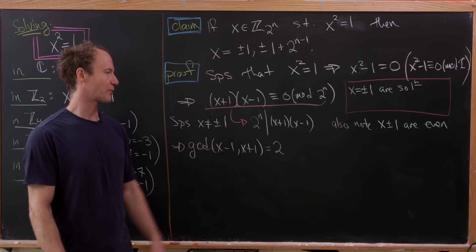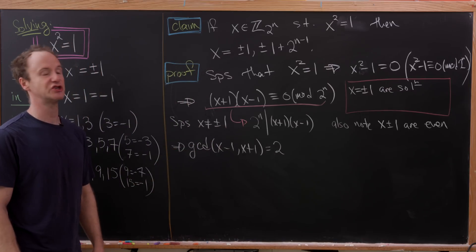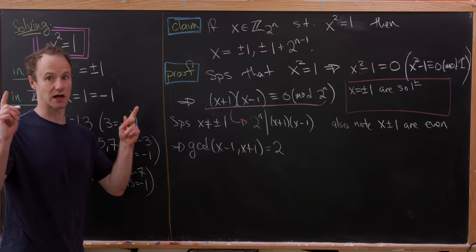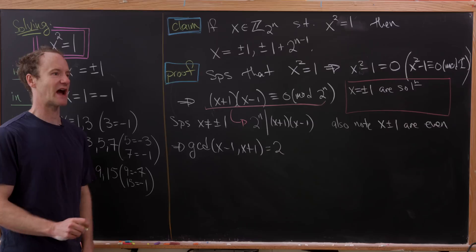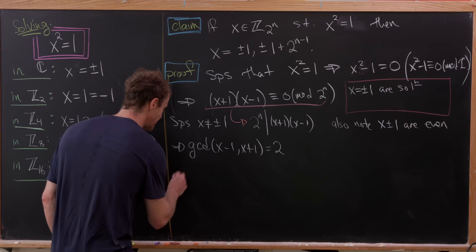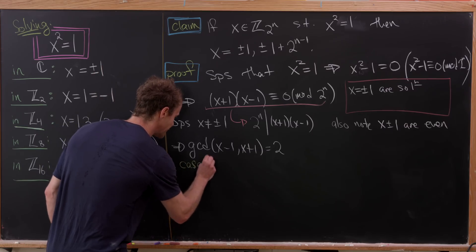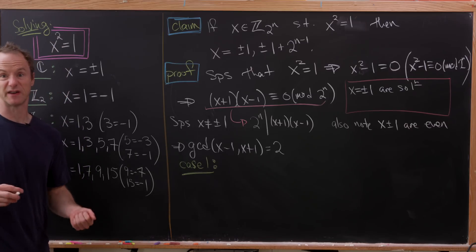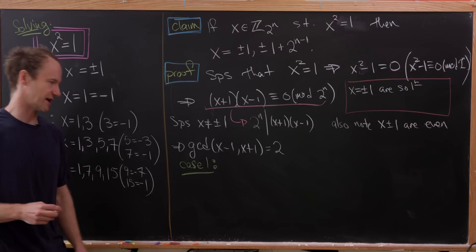But then we take their product and we get a multiple of 2ⁿ. That means that one of these is gobbling up most of the factors of 2 while the other one only has one factor of 2. So I'll split this into cases. And I'll do the first case, but I'll let you do the other case to fill in everything.